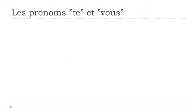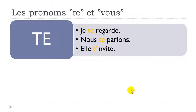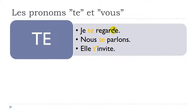Sur les pronoms te et vous. So let's see a few examples with te. The rule in French goes like that: when you put some pronouns, you will have to put them always before the verb. So if you look at this sentence, the first one for instance, you get je — so subject, I — then you get regarde, so that's the verb: to look, to watch.